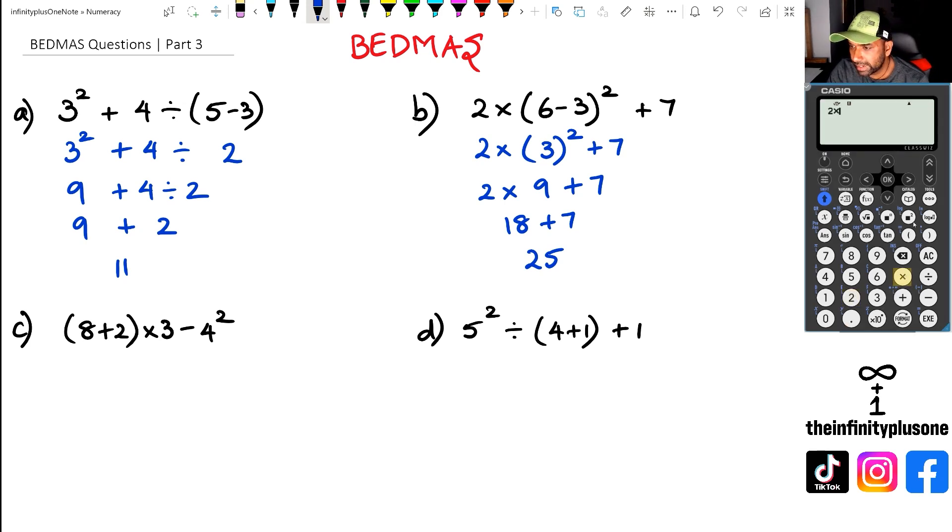Now, let's actually work that out here. So we've got two times six minus three squared plus seven, and that's giving us twenty-five. We're happy with that.